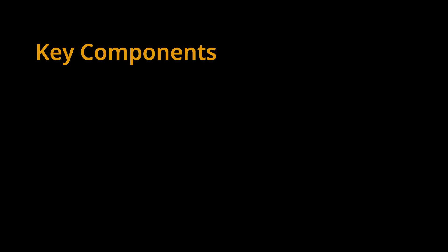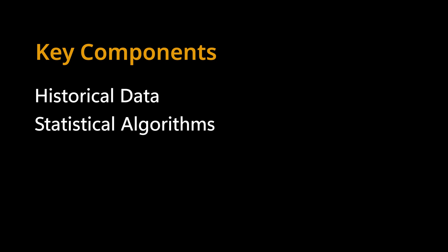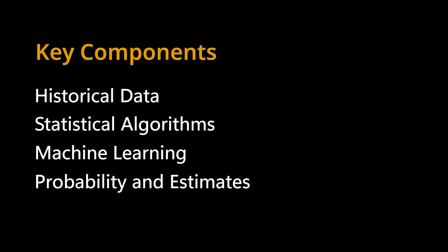Its key components are: Historical data – predictive models rely heavily on past data to identify patterns and trends. Statistical algorithms – techniques like regression, time series analysis, and classification are used to build predictive models. Machine learning – advanced algorithms that learn from data and improve their predictive accuracy over time. Probability and estimates – predictive models don't provide absolute certainty, but rather probabilities and estimates of future outcomes.